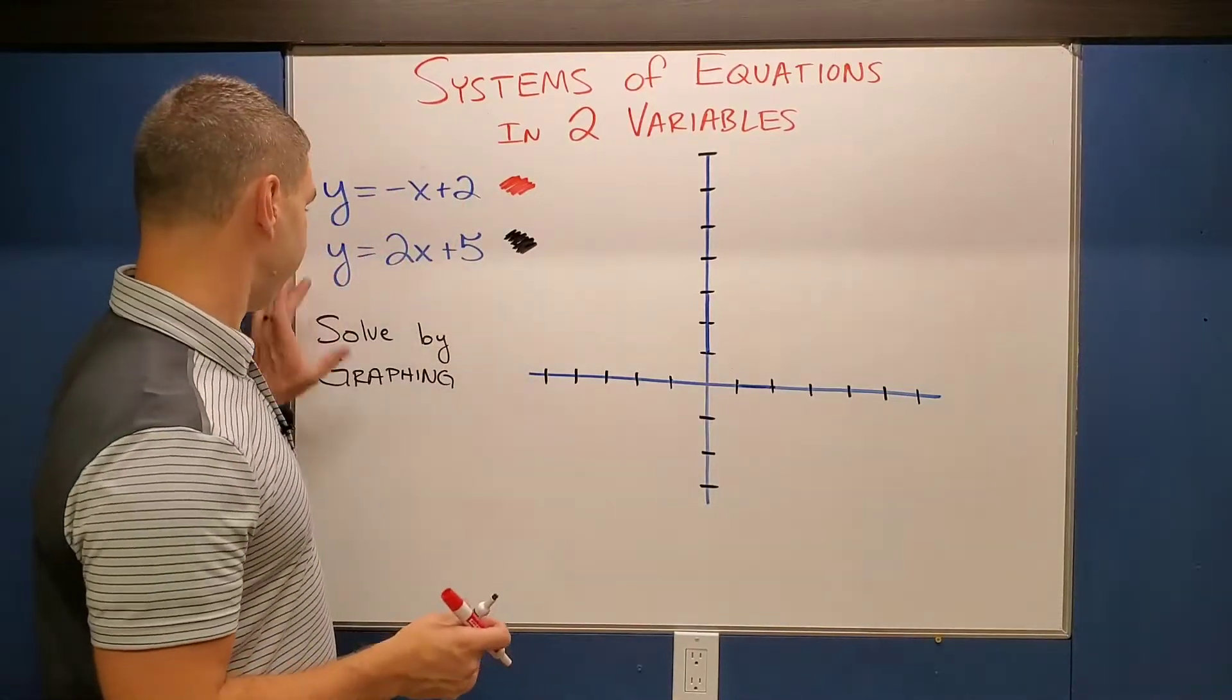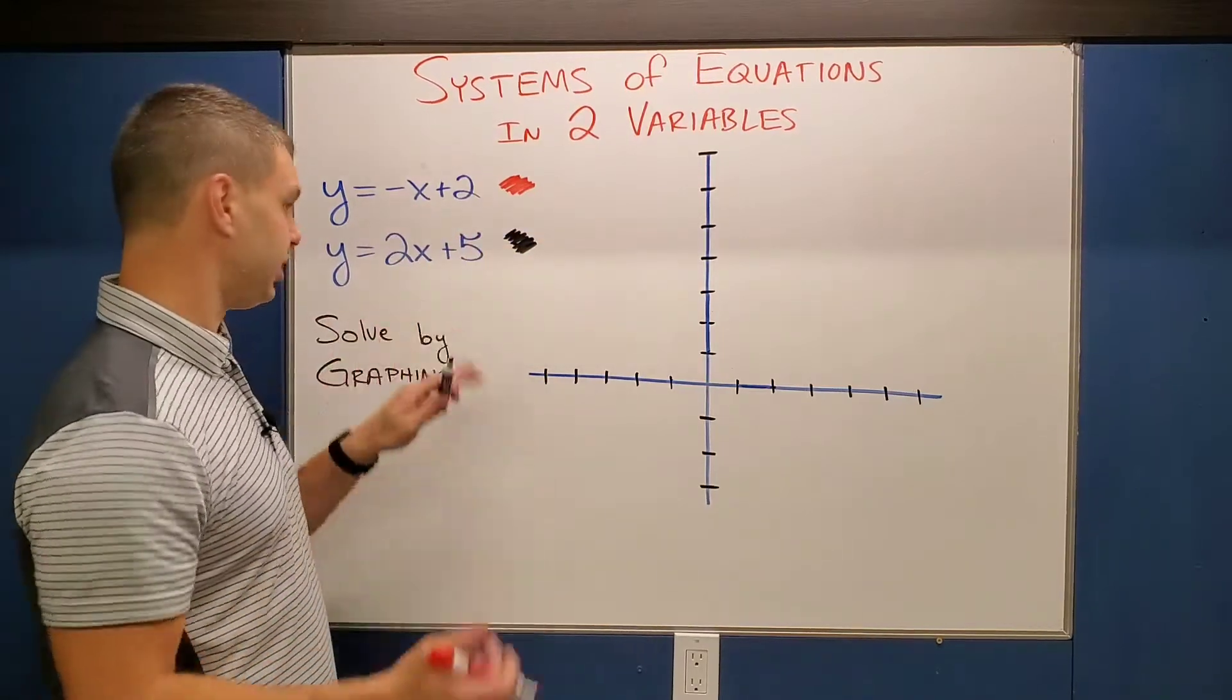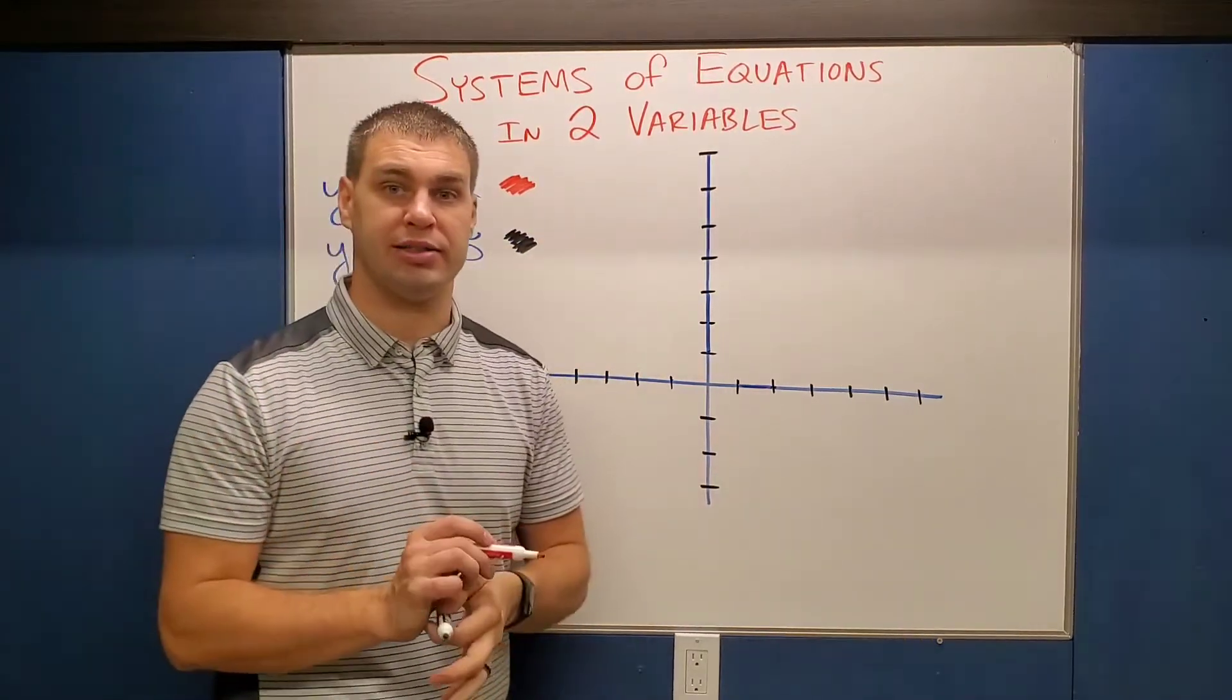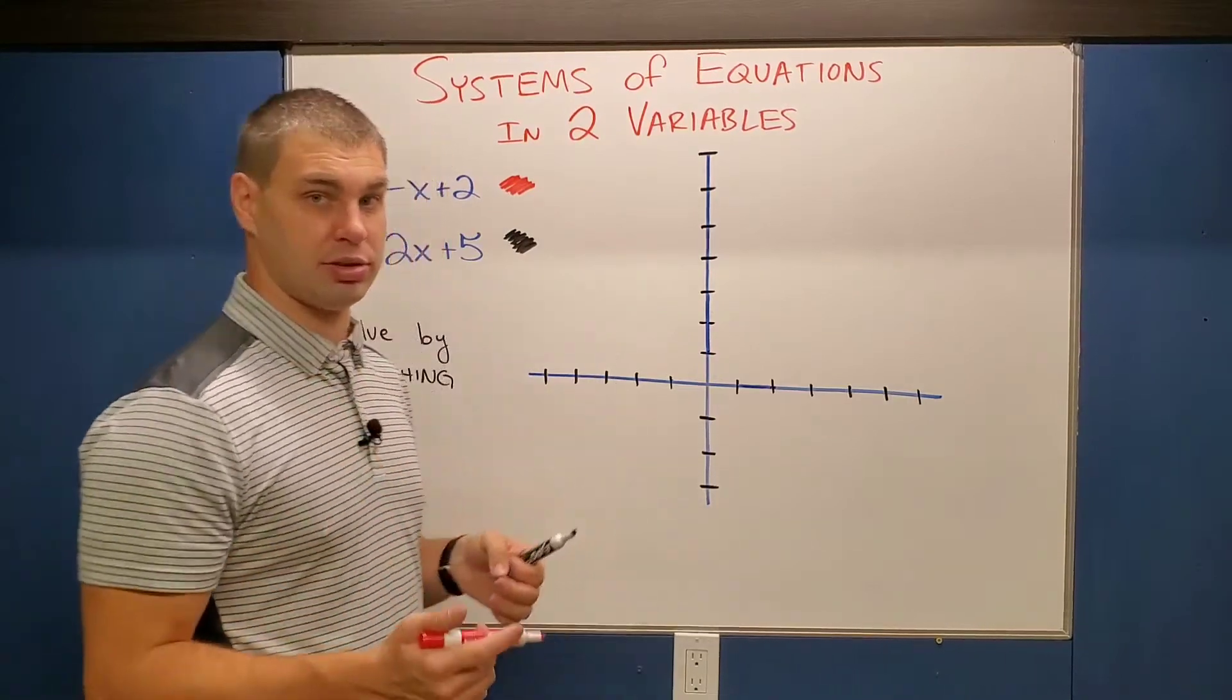Here we're asked to solve this system of equations by graphing, which means that this top equation, which I'll do in red, this bottom one I'll do in black, wherever those cross, our answer is going to be the ordered pair at the point which those cross.